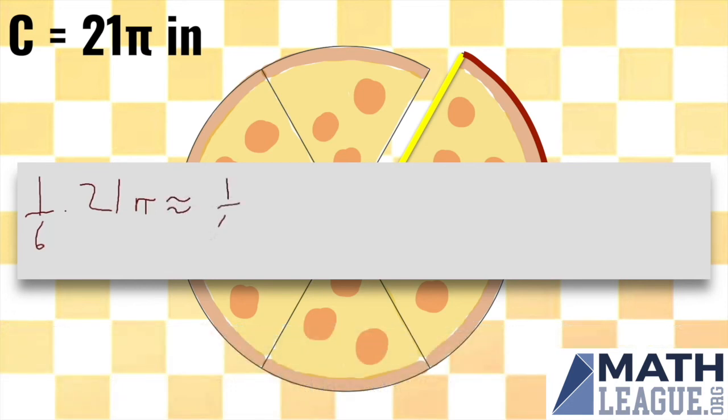Substituting that, we get 1 over 6 times 21 times 22 over 7. The 7s cancel out and leave a 3, the 3s cancel out, there's a 2, then the 2s cancel out, and we are left with 11.